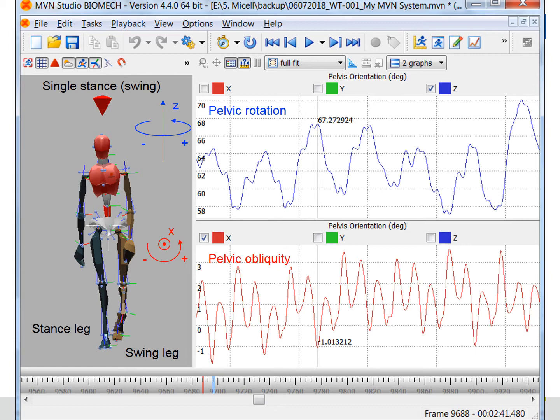For pelvic rotation, we can take the rotating angle around the z-axis from the pelvic orientation, so we know how the pelvis is rotated around the z-axis. For pelvic obliquity, we can take the rotating angle around the x-axis, which is the anterior-posterior axis, so we can observe how much the slope is made.